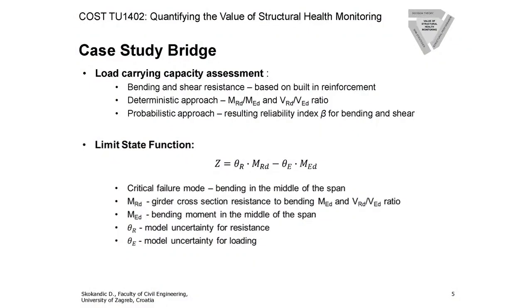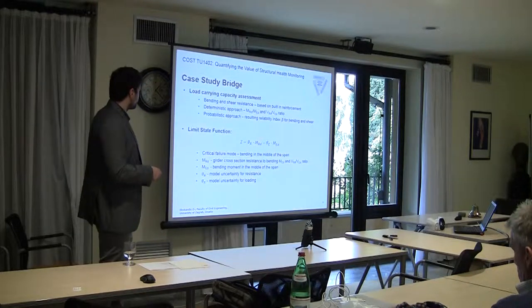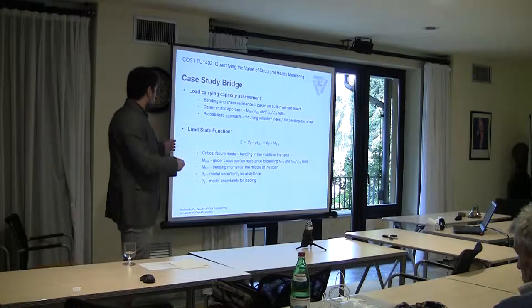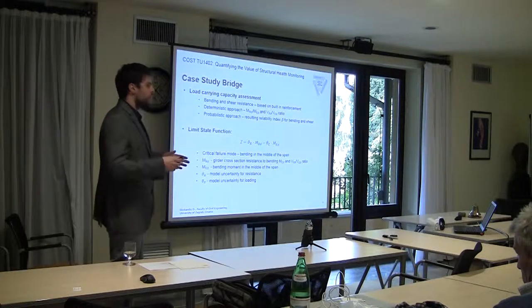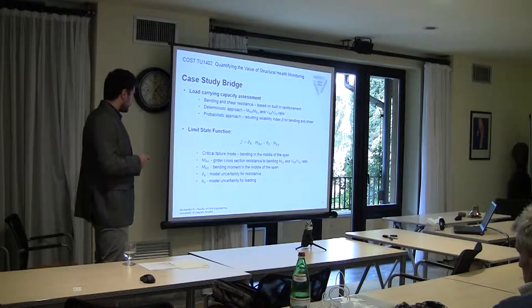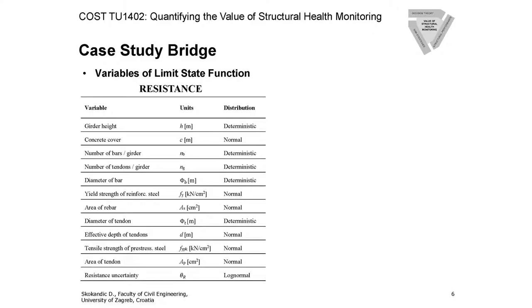What we did is put together a limit state function and chose a critical failure mode. As it is a simply supported bridge, the critical failure mode is bending in the middle of the span. We defined a limit state function where this is resistance to bending and this is load effect as a bending moment, and we did it for each girder separately — both deterministically and probabilistically. For the probabilistic assessment, every variable in this equation was modeled as a stochastic variable. Here we can see for the resistance side of the equation what variables were used and what distributions were chosen.